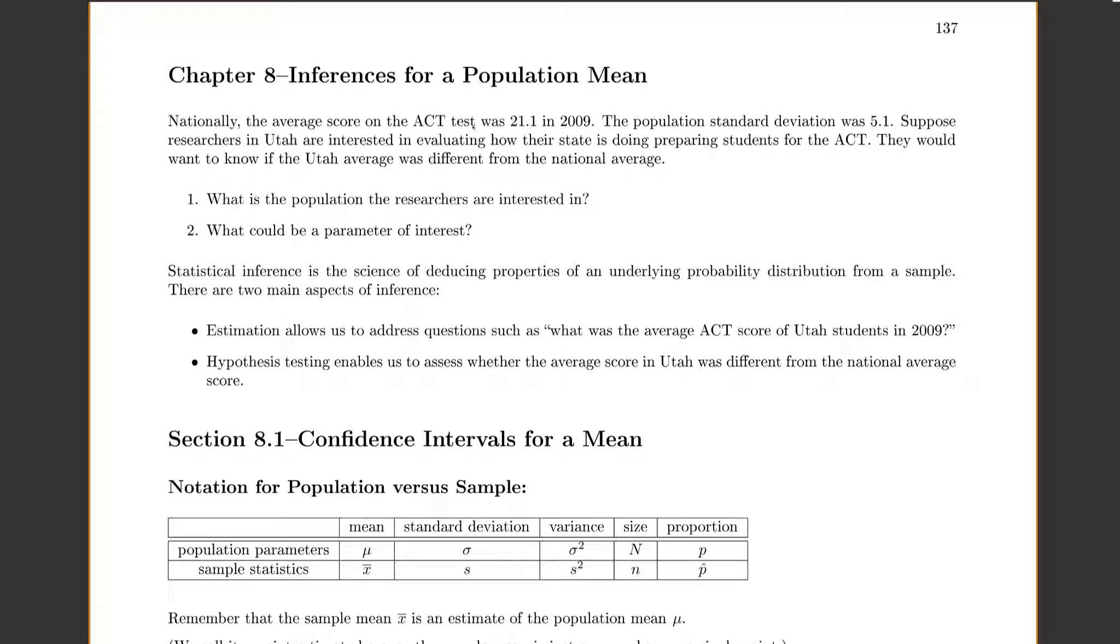So nationally, the average score on the ACT test was 21.1. The population standard deviation was 5.1. Let's suppose that researchers in Utah are interested in evaluating how their state is doing preparing students for the ACT. They'd want to know if maybe the Utah average was different from the national average.